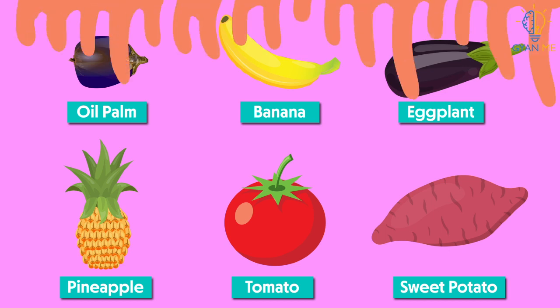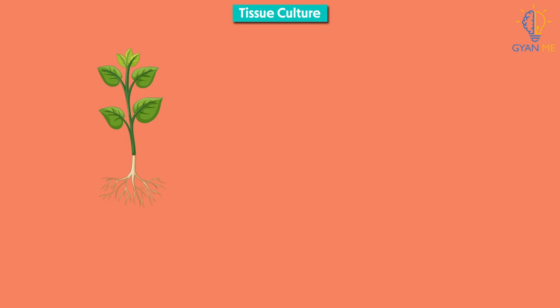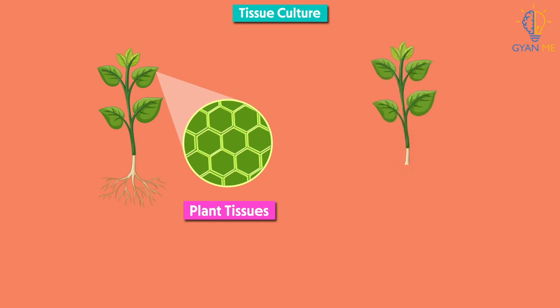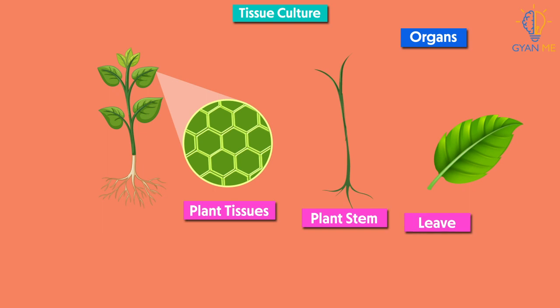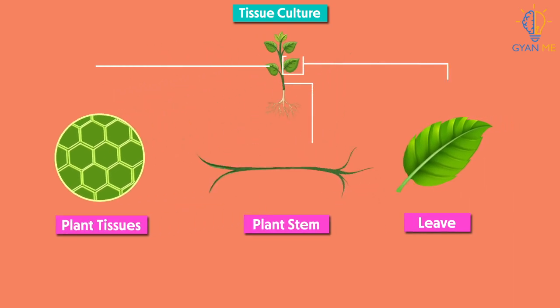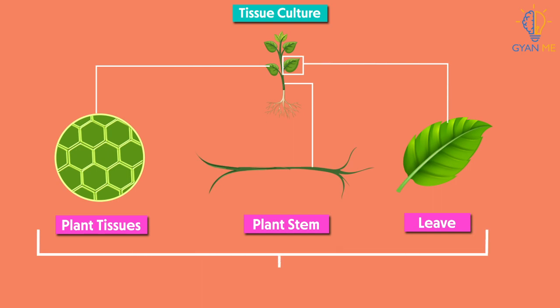So let's see this technique in detail. In this method, we take a small piece of the growing tip of a plant to grow into a new plant. Many times, organs are also used for tissue culture. The parts of the plant used for culturing are known as explants.